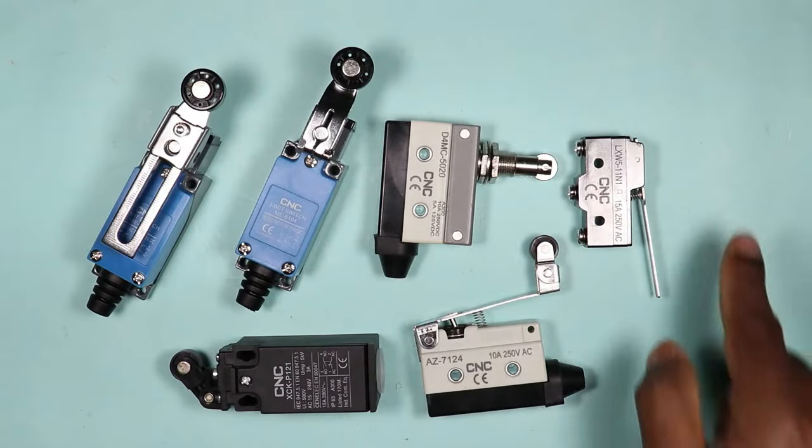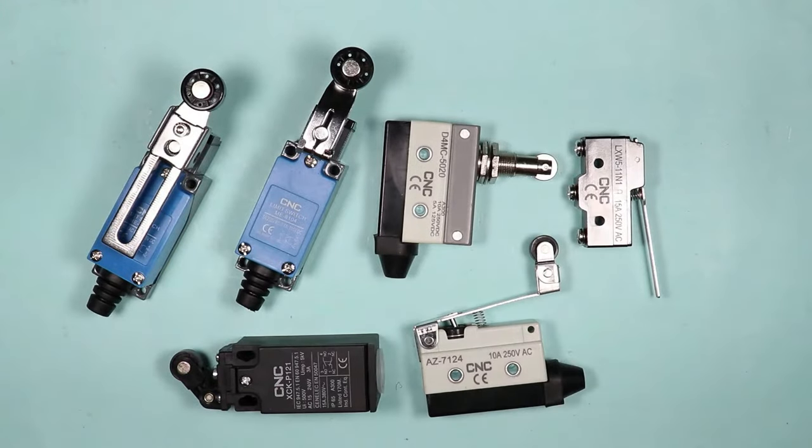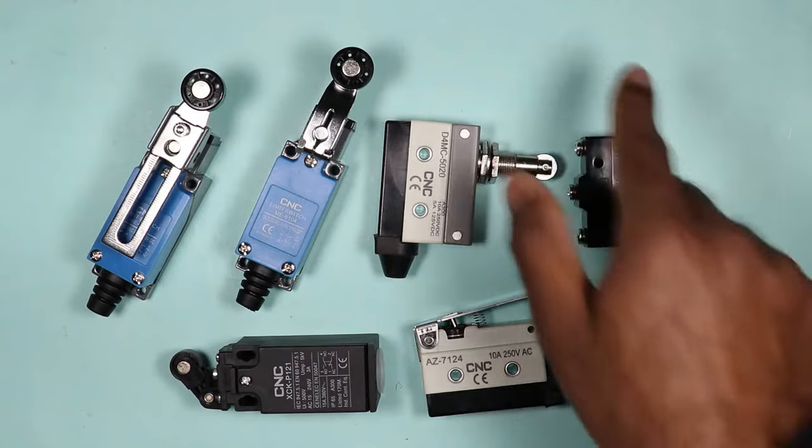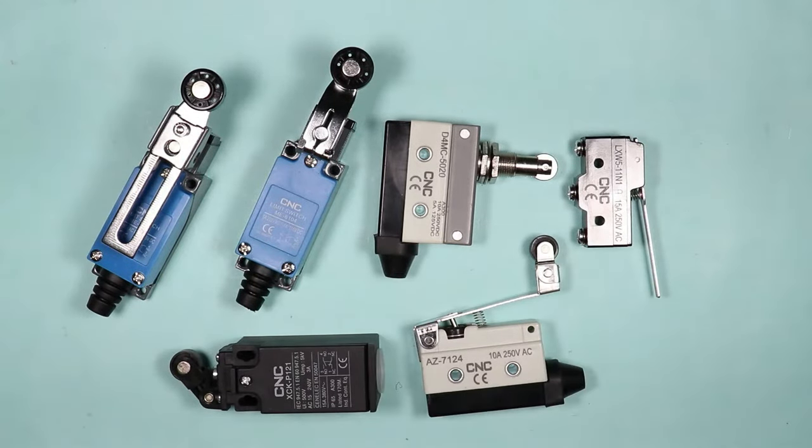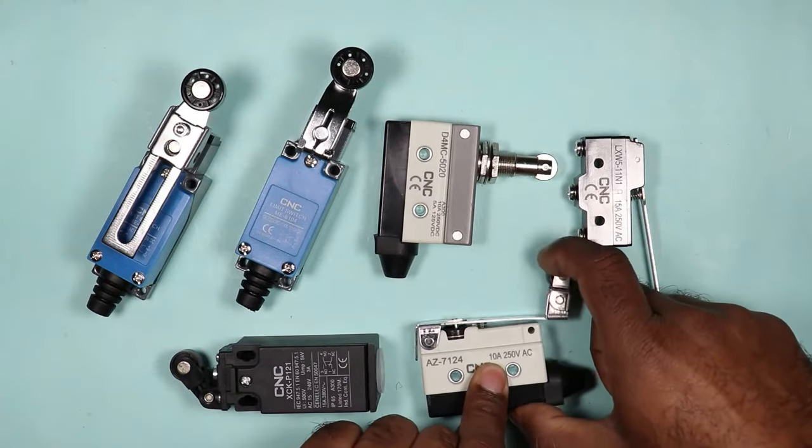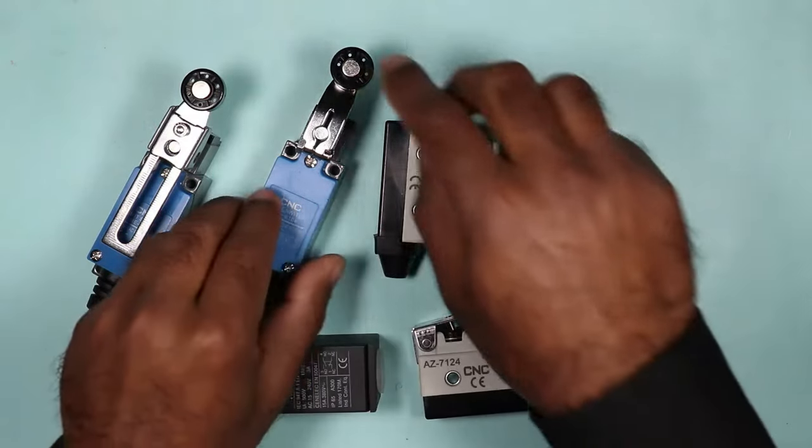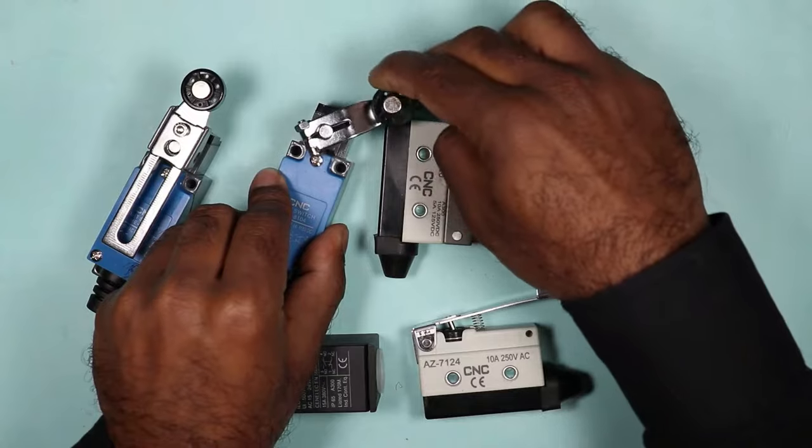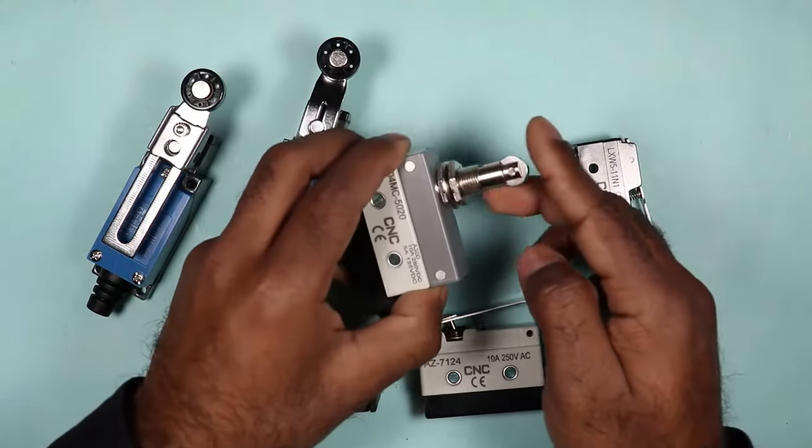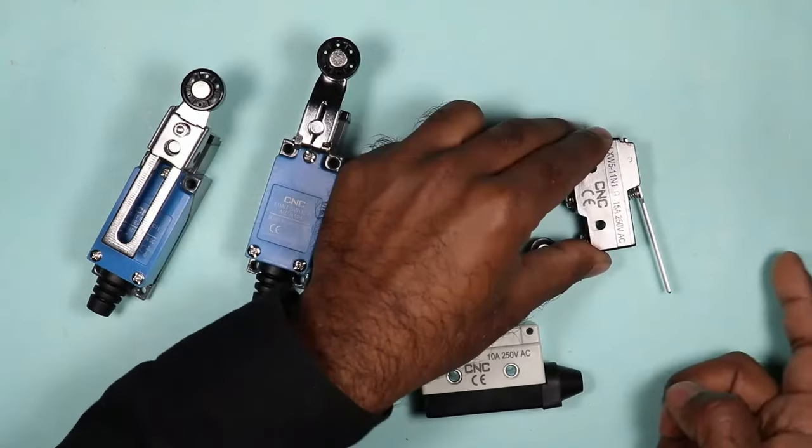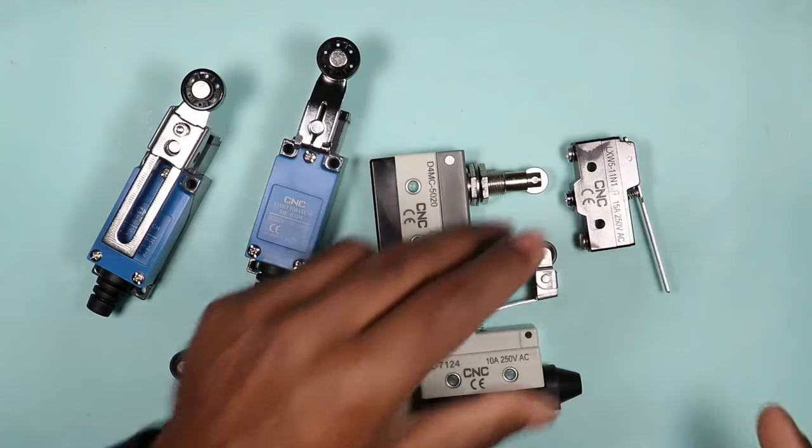There are many types of limit switch. As you can see, total six types of switch I have right now, which is manufactured by CNC company. There are more types of limit switch other than these. By types of limit switch, I mean the way in which switch is operated. Like this switch is operated like this. This one is operated by pressing on the top. This one needs to be operated like this. Only the way in which it is operated is different, but the working and wiring will be same for all.